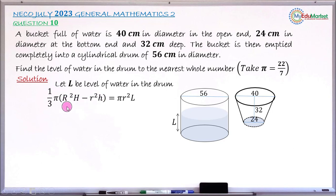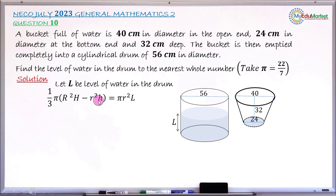This formula for the frustum results from the volume of the large cone minus the volume of the small cone. We equate this with the volume of the water inside the cylindrical drum to height L. Our main task now is to find capital H, the height of the larger cone, and small h, the height of the small cone. To get a large cone and small cone, the smaller cone is the one cut and removed from the larger cone to form this bucket. Capital H will simply be 32 plus small h.